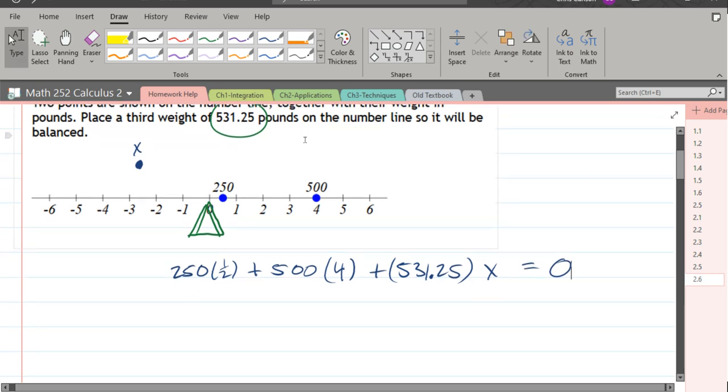So let's go ahead and multiply these out. 250 cut in half is 125, 500 times 4 is a lot, 2000.